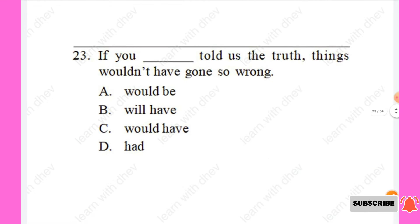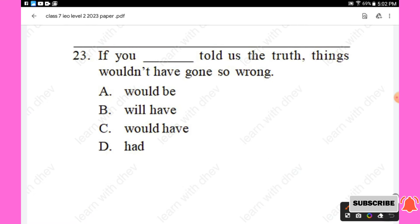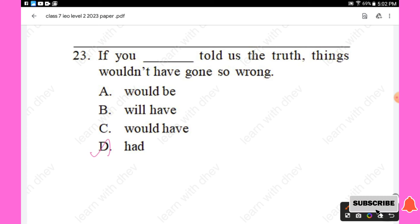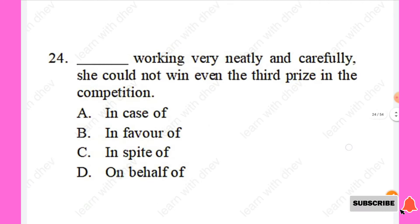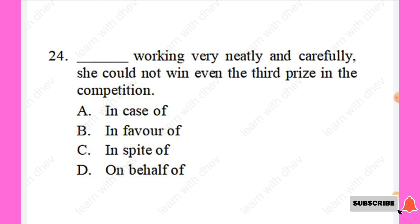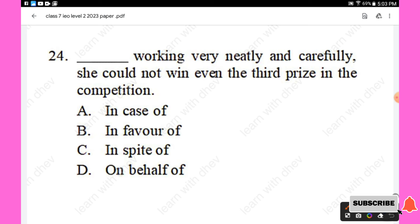Question 23: If you — told us the truth, things wouldn't have gone so wrong. Options: would be, will have, would have, had. The right answer is 'had' — if you had told us the truth. Question 24: — working very neatly and carefully, she could not win even the third prize. Options: in case of, in favor of, in spite of, on behalf of. The right answer is 'in spite of.' Option C.